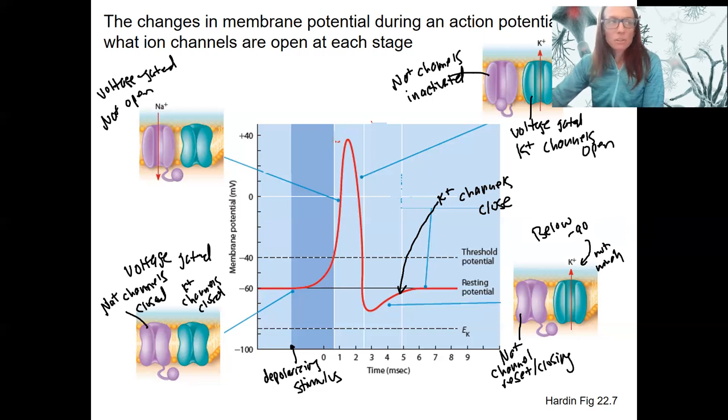Last thing to talk about is the refractory periods. And another color here, we're going to do two different refractory periods. There is an absolute refractory period that is absolutely a refractory period. That's when you cannot generate another action potential, even if there's a super strong stimulus.